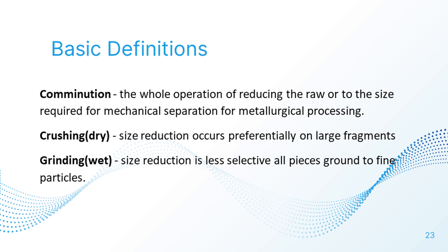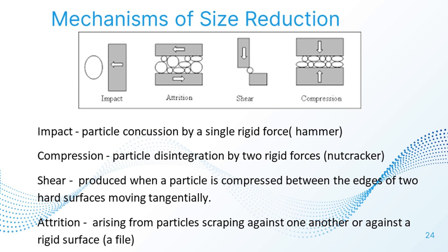Crushing, a dry process, is where size reduction occurs preferentially on large fragments. Grinding, a wet process, is less selective and reduces all pieces to fine particles. The mechanisms of size reduction are: impact — concussion by a single rigid force; compression — particle disintegration by two rigid forces; shear — compression between edges of two hard surfaces moving tangentially; and attrition — particles scraping against one another or against a rigid surface.